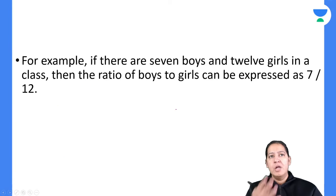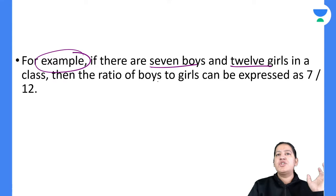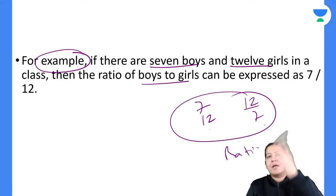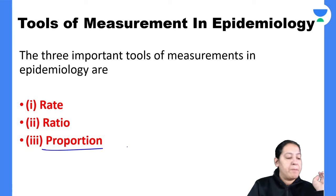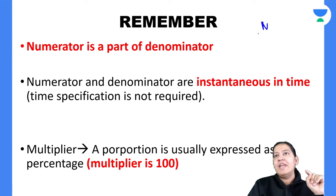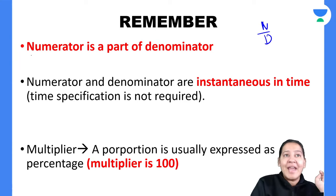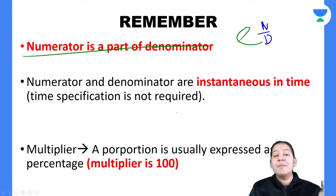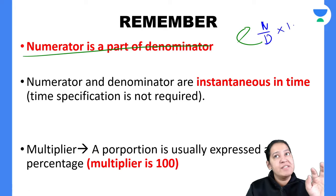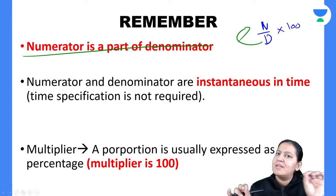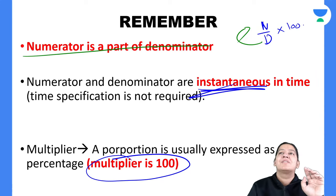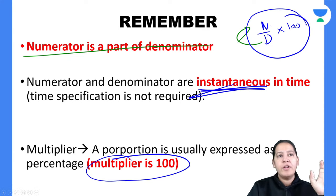In the example of ratio: if there are 7 boys and 12 girls, the ratio of boys to girls is 7 upon 12; girls to boys is 12 upon 7 - both are ratios. Now coming to proportion: in proportion, again the numerator is part of the denominator, like in rate. But the key difference from rate is that the multiplier is always 100, and there is no time specifier - it is instantaneous.